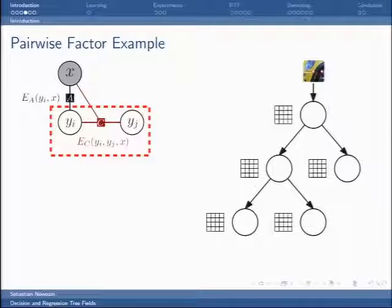In the ICCV work we offer a flexor representation using decision trees. Here's, for example, a pairwise interaction. There are two random variables and X is the observed image. We define the functional form of an energy function for the two random variables and the image we observe. How we do this is by using a decision tree and we store at the leaves of the decision tree a small table addressing for every possible combination of these two random variables the actual energy values.